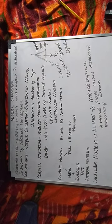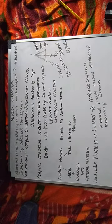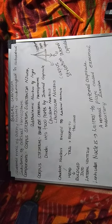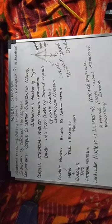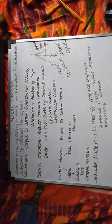Components — components is nothing but parts. We have three parts: Corpus Striatum, Substantia Nigra, and Subthalamic Nucleus of Lewis. These three are the components of the basal ganglia.